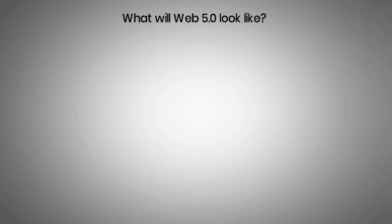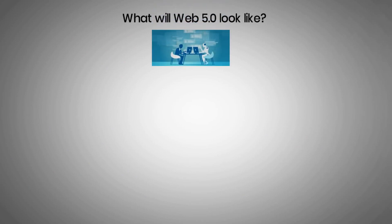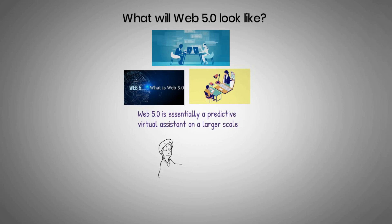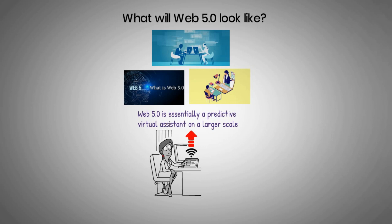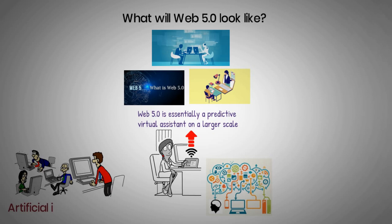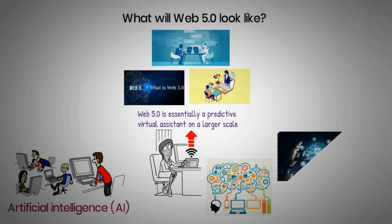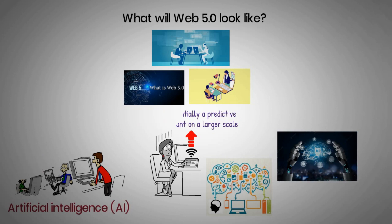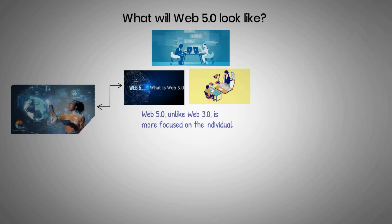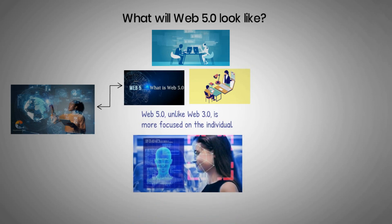What will Web 5.0 look like? Consider how virtual assistants can predict user needs by looking at their behavior — this is how Web 5.0 works. Virtual assistants can accurately predict what users need even when there aren't any clues. Web 5.0 is essentially a predictive virtual assistant on a larger scale, capable of interpreting different types of information at much higher levels. The factor which allows computers to communicate similarly to human communication is called artificial intelligence, or AI. This technology allows computers to reason, think, and respond to user input. Web 5.0, unlike Web 3, is more focused on the individual, offering each user a completely different experience. The interactions between people will vary if the AI can sense emotions and respond appropriately.